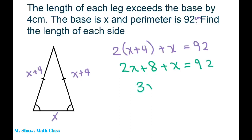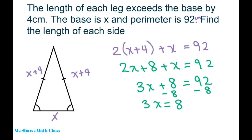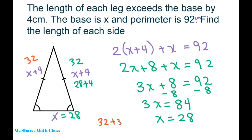So we get 3X plus 8 equals 92. If you subtract 8 from both sides using the subtraction property, you get 3X equals 84. When you divide this using the division property, you get X equals 28. So we know X is 28, which means these two sides are 28 plus 4, which is 32. So 32 plus 32 plus 28 — all in centimeters — equals 92.